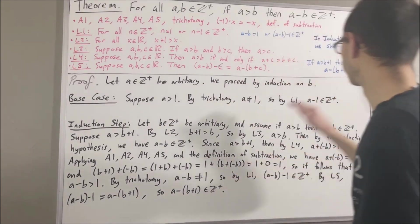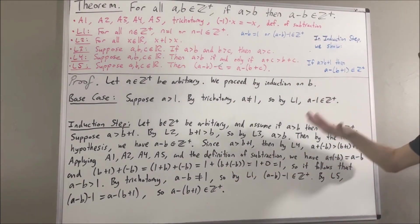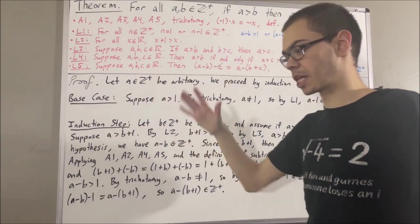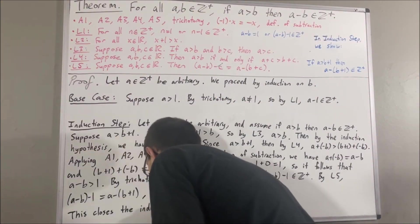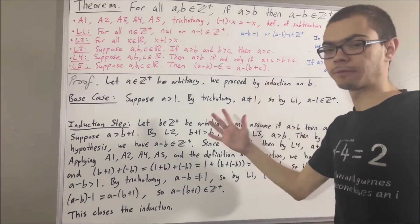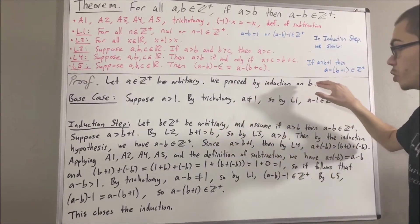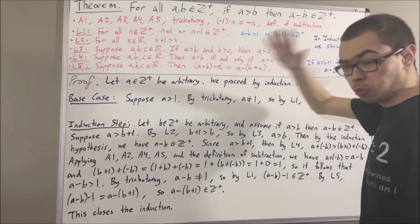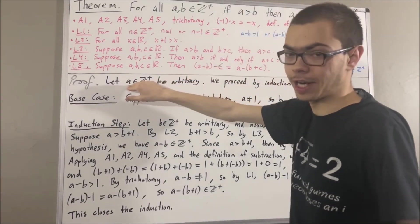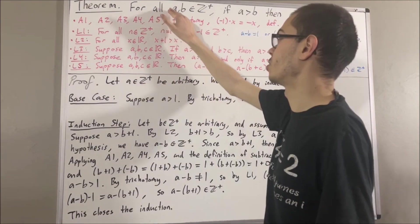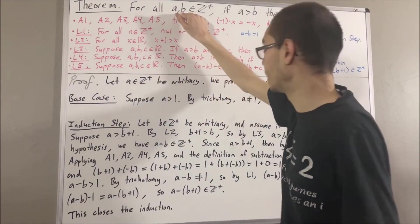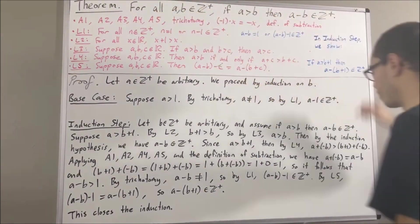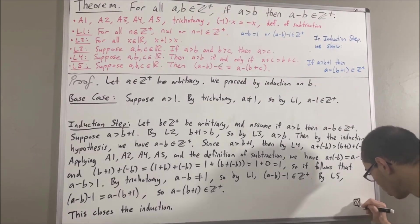And that is exactly what we wanted to show. So, this completes the induction step. Because we've completed both the base case and the induction step, this closes the induction. So, by mathematical induction, we have shown for all positive integers b: if a is greater than b, then a minus b is a positive integer. And we proved that statement for an arbitrary positive integer a. Therefore, we have proven for all positive integers a and all positive integers b: if a is greater than b, then a minus b is a positive integer. So, we have proven the theorem. This completes the proof.